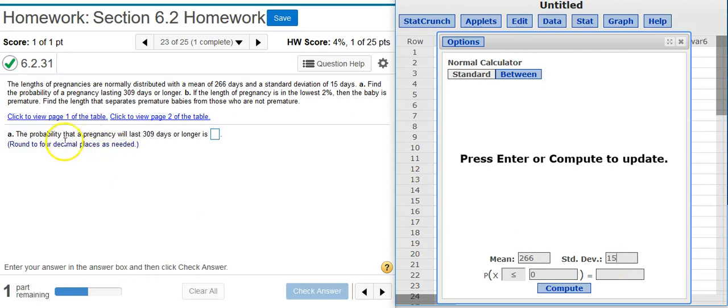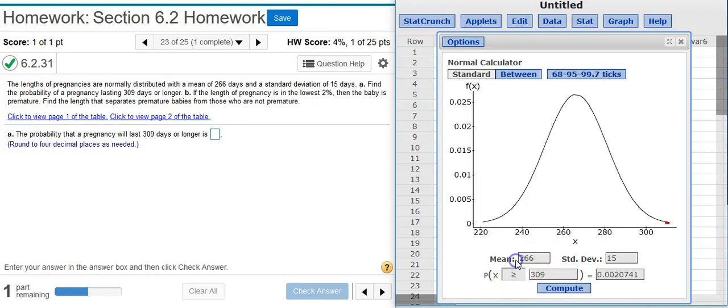And then I'm looking for the probability that a pregnancy will last 309 days or longer. Well, look at how this is ordered here. Probability is P. X is my random variable. That's going to be the 309 days. But it needs to be 309 days or longer, which means that this is greater than or equal to 309. So I got to flip that around.